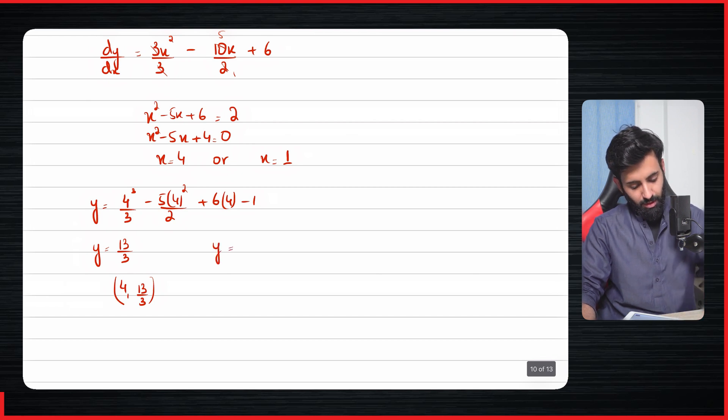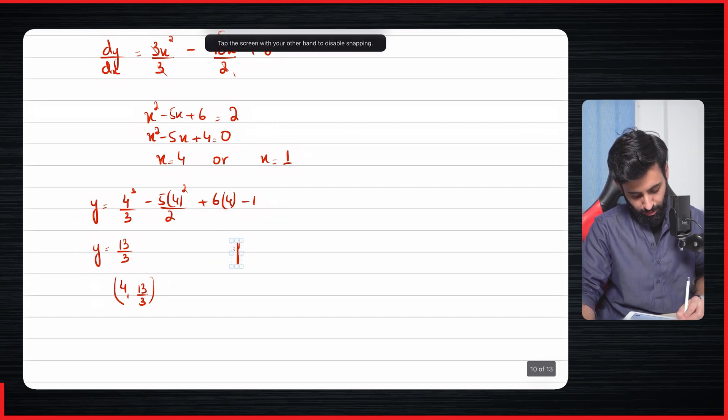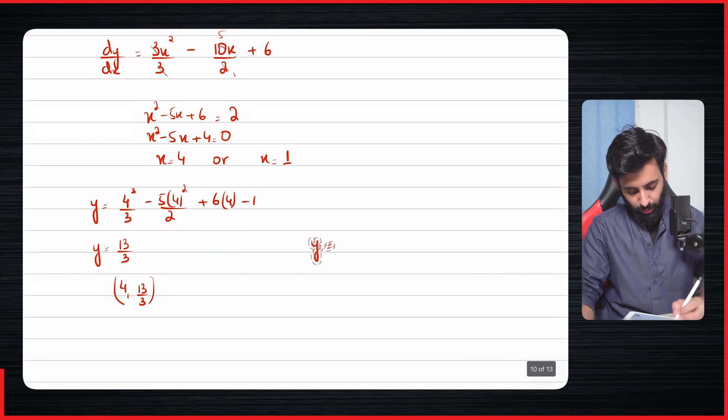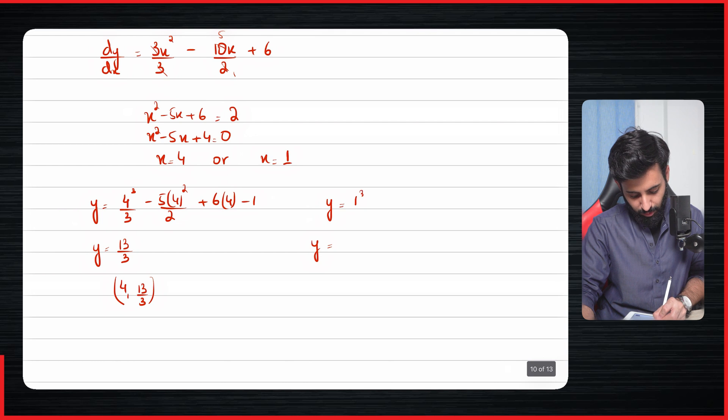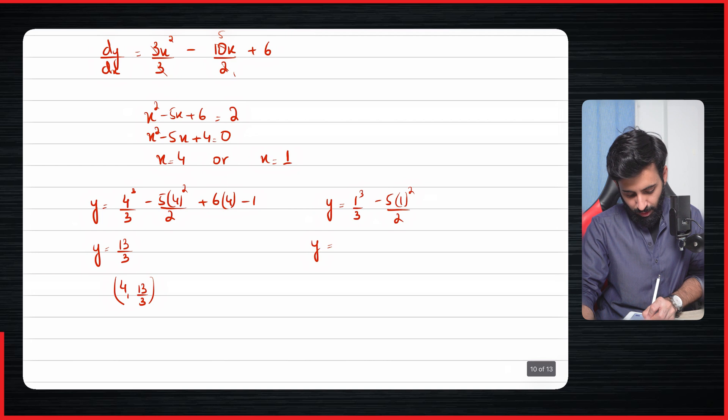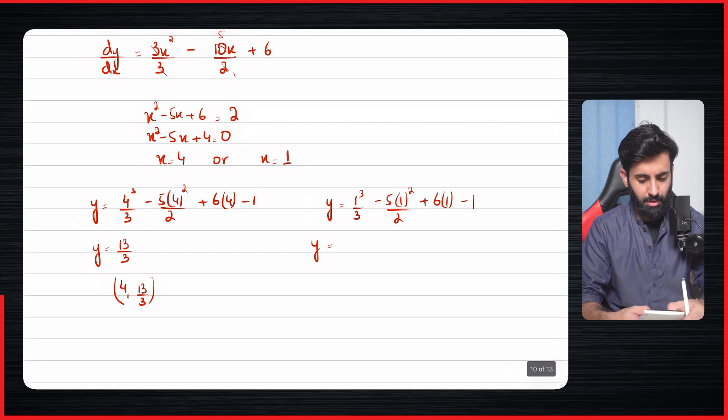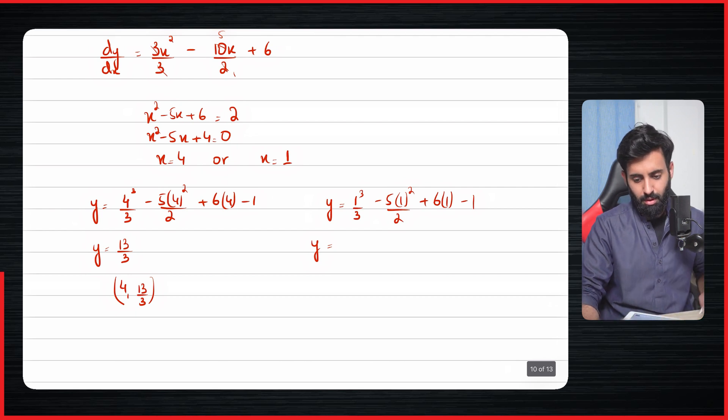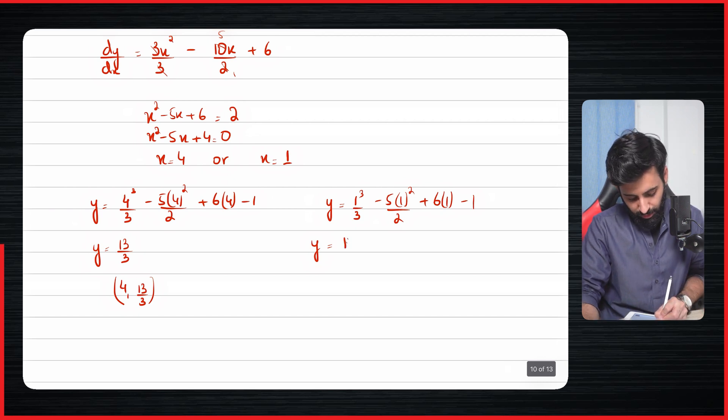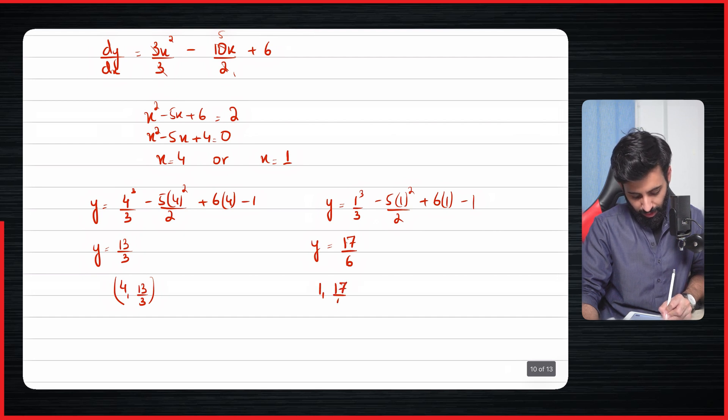And then let's find out the other y coordinate for which we're going to plug in the x coordinate 1. So let's see what happens when we do that. So y equals 1 cubed upon 3 minus 5 into 1 squared upon 2 plus 6 into 1 minus 1. Let's replace 4 with 1 in the expression that I've already made in the calculator. So let's see, we get 17 over 6, which is again the correct answer. So y equals 17 over 6. And again, don't forget to write it in point form. So 1 comma 17 over 6.